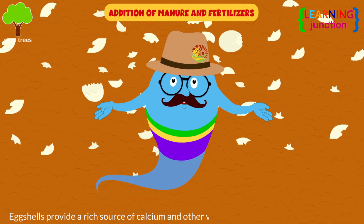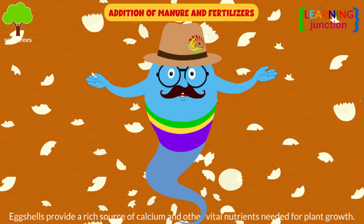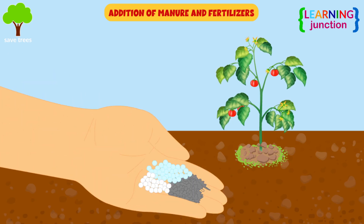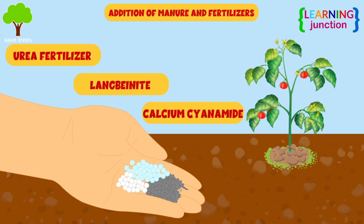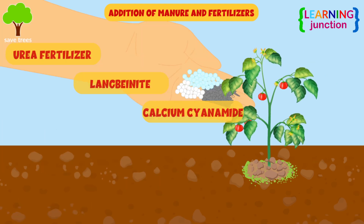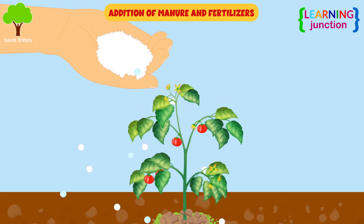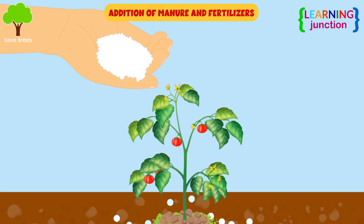Step 3: Addition of manure and fertilizers. Crops need different nutrients to grow well. Compost and manure are mixed with the soil to enhance its nutrient value and provide nutrition to the crops.